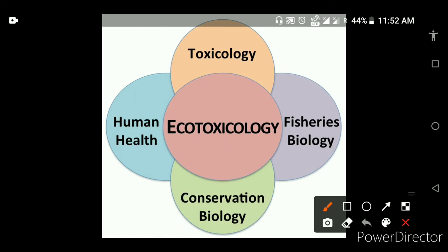There are four sites — four areas — where we study ecotoxicology. First of all is toxicology. Toxicology is the study about toxic elements: those elements that are harmful, and the effect of their harmfulness. This toxicology always falls under the subject of ecotoxicology.